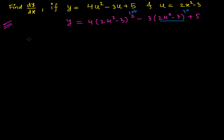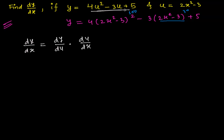The chain rule says: to find the derivative of composite function y with respect to x, first find the derivative of y with respect to u, then find the derivative of u with respect to x. Here, u is another function hidden inside y — u is 2x squared minus 3.